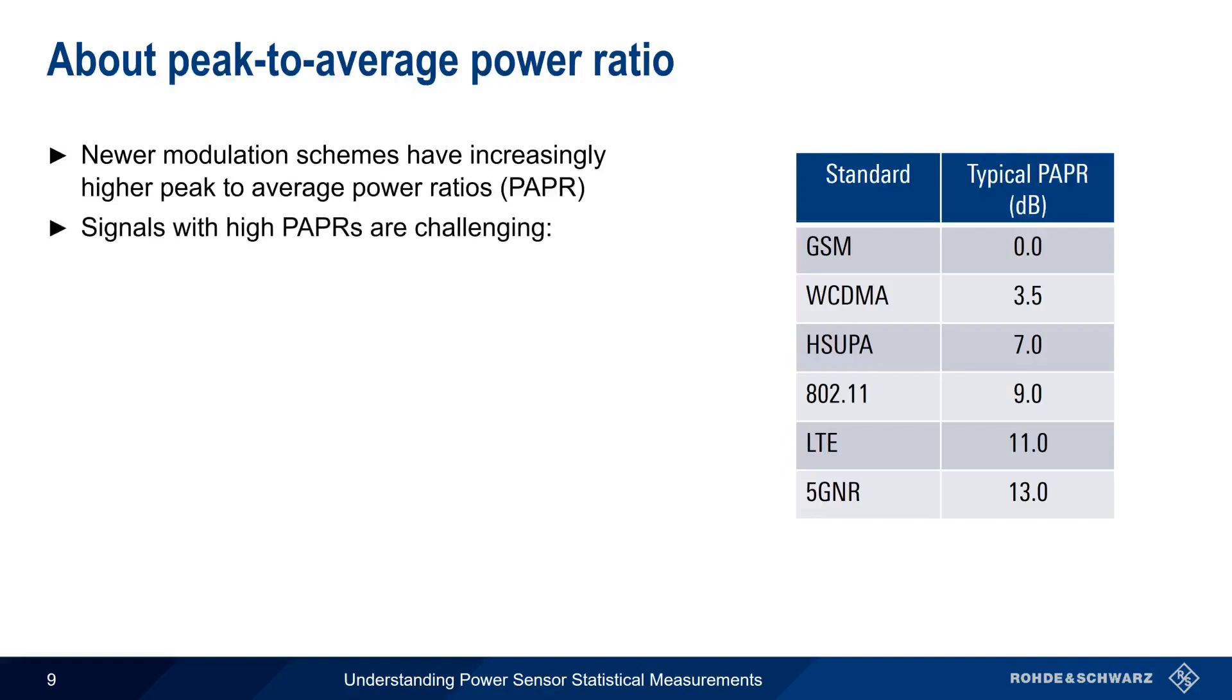This creates non-trivial challenges for device designers because signals with high peak-to-average ratios require things like high dynamic range in analog-to-digital converters, or highly linear amplifiers with high peak power capability.